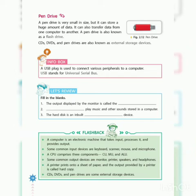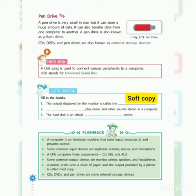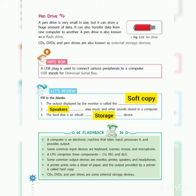Now let's review with fill in the blanks. The first one: the output displayed by the monitor is called — soft copy. The second one: which device plays music or sound stored in a computer? — Speakers. The third one: the hard disk is an inbuilt dash device — the answer is storage. The hard disk is an inbuilt storage device.